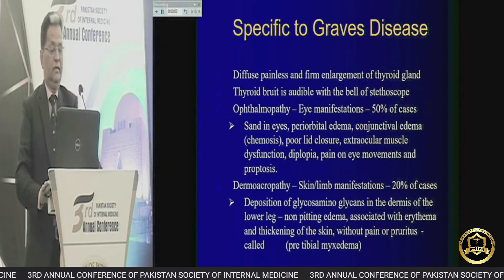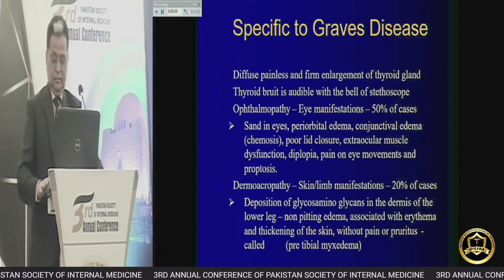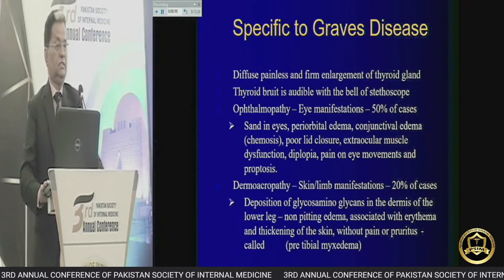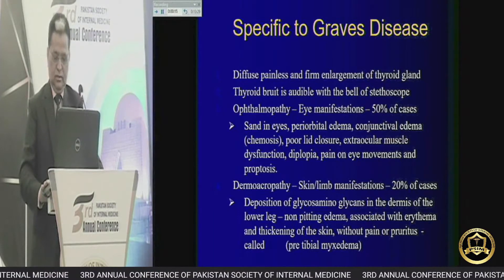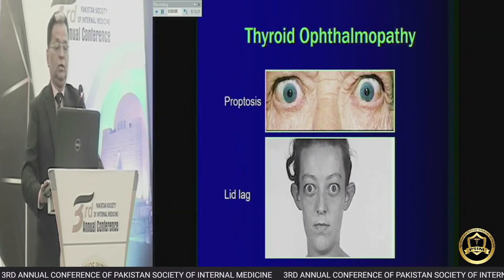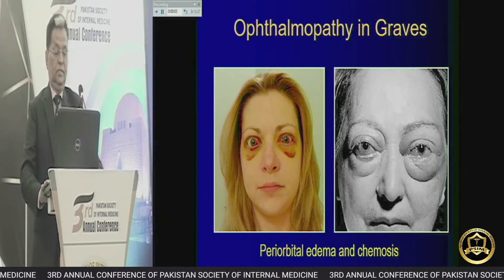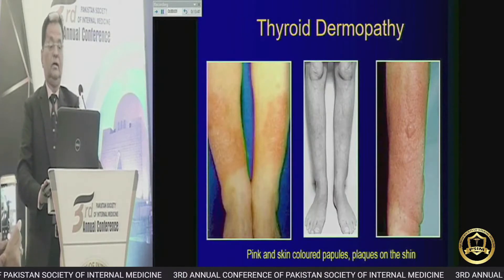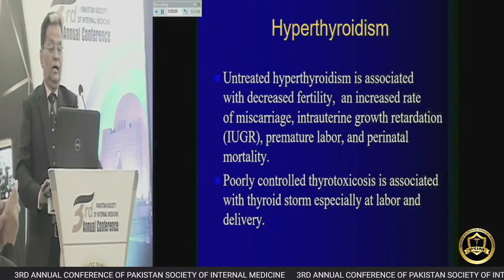The thyroid eye signs include proptosis, lid lag, chemosis, and peritibial edema. There may also be dermoacropathy, thyroid dermopathy, thyroid acropathy, and hyperthyroidism. When these features are present, you should not be confused — this is Graves disease.